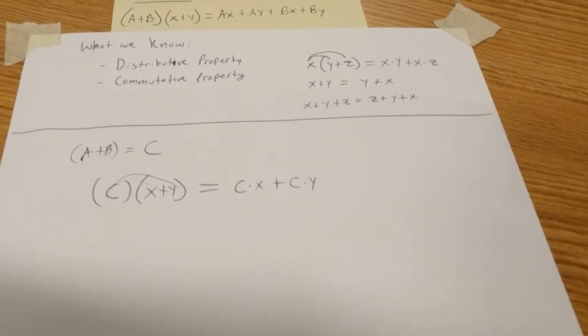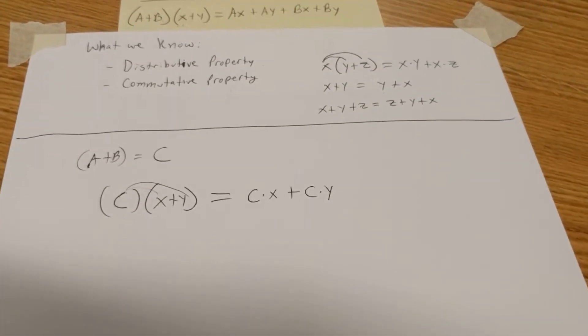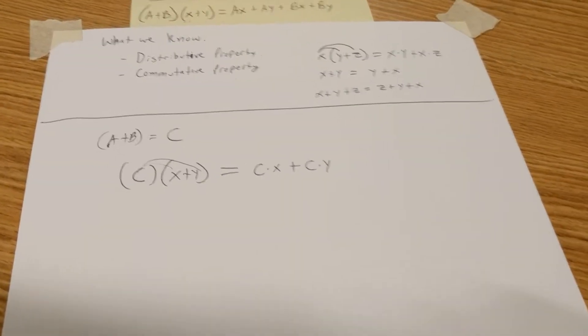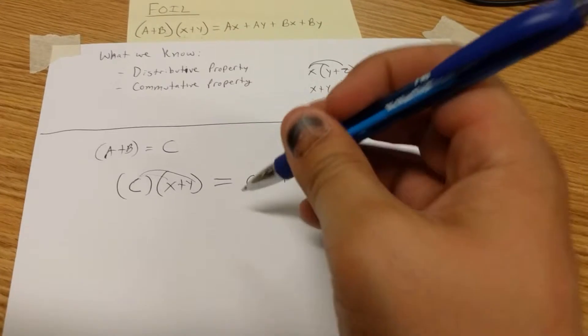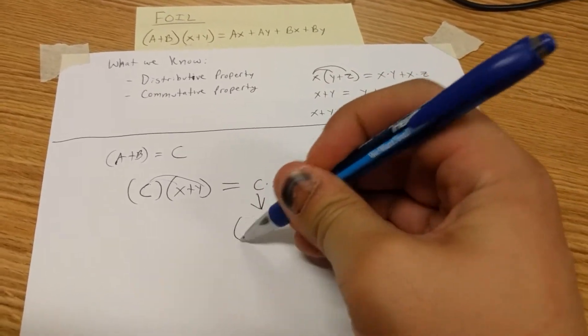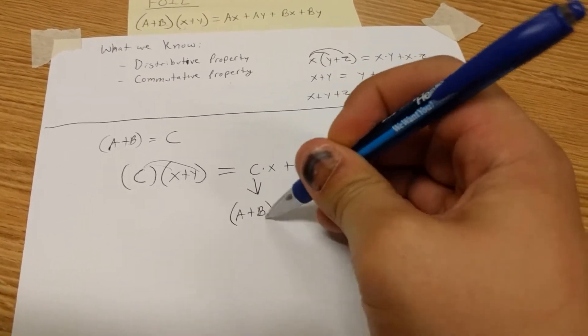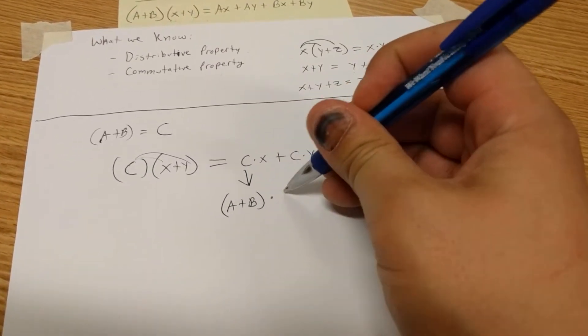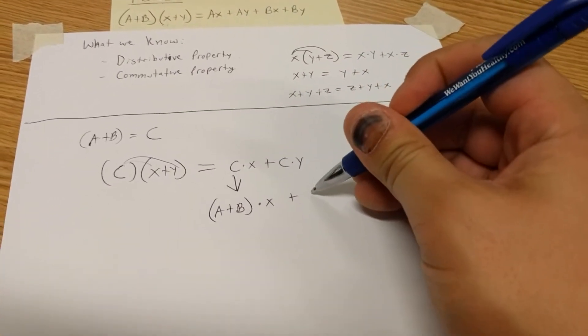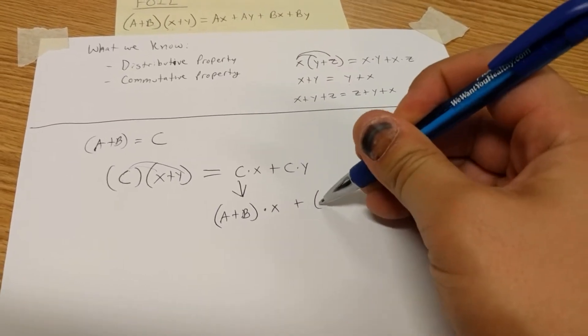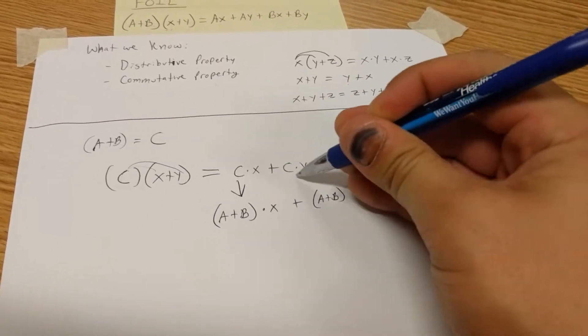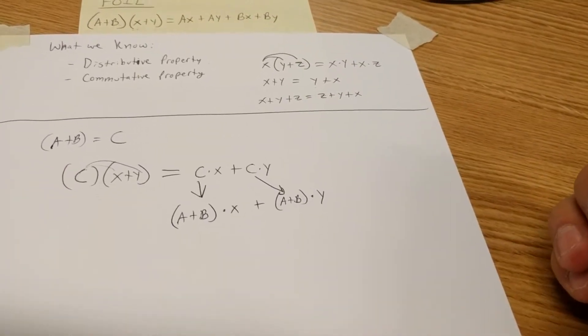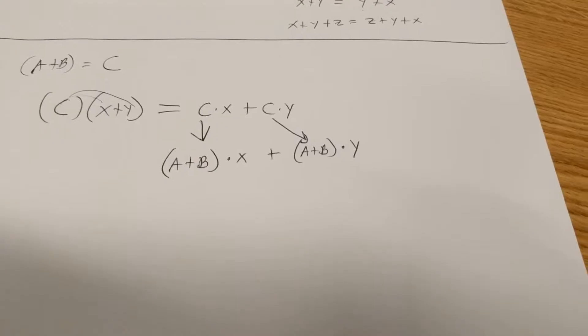After that, we're going to start using substitution. We have c times x, but what really is c? Well, we know that c is a plus b, as our substitution indicated up here. That's times x, plus once again we have letter c, so we're going to make it a plus b times y.